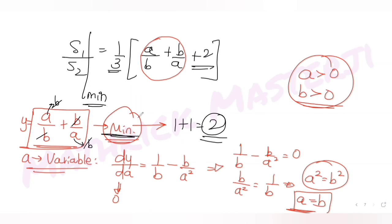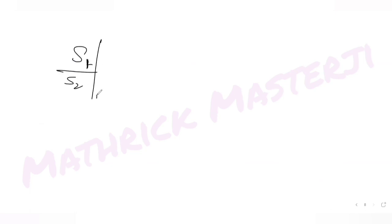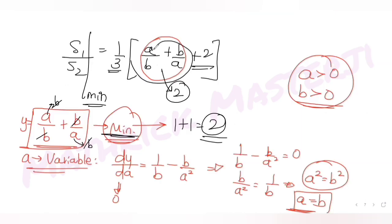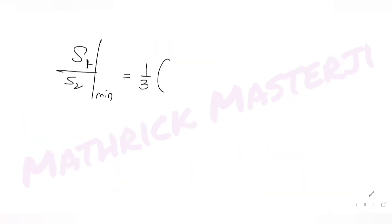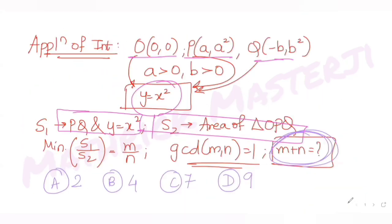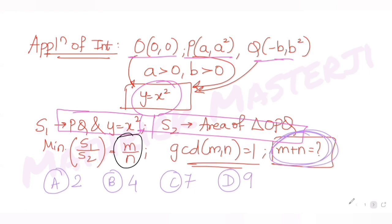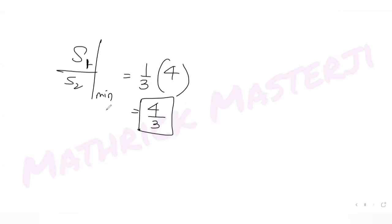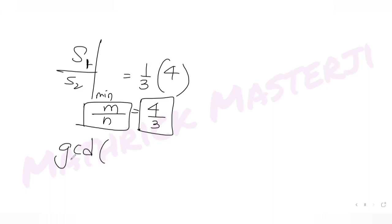The minimum value of S1/S2 is (1/3)(2 + 2) = 4/3. The question states this minimum equals m/n where gcd(m, n) = 1. So m/n = 4/3, giving m = 4 and n = 3, since gcd(4, 3) = 1.